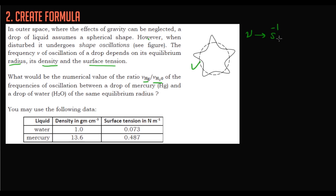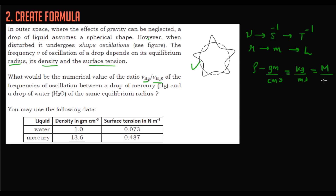Frequency ν has dimension T⁻¹. Radius R has dimension L. Density is given in g/cm³, which in SI is kg/m³, so its dimension is ML⁻³.